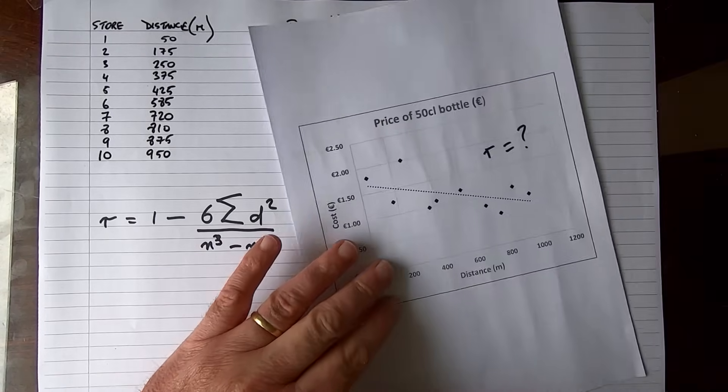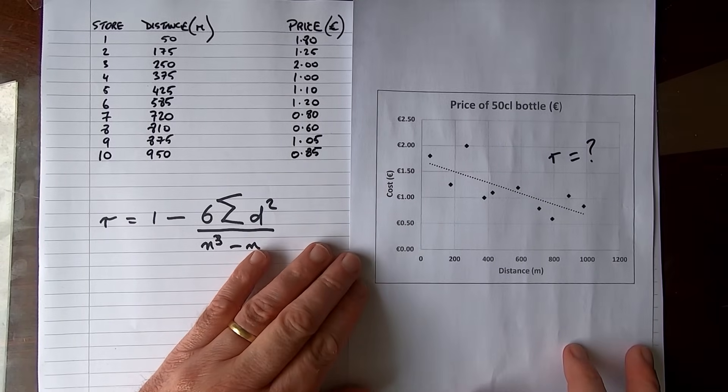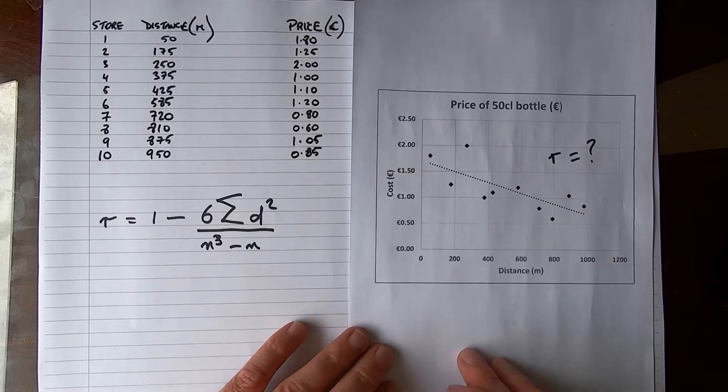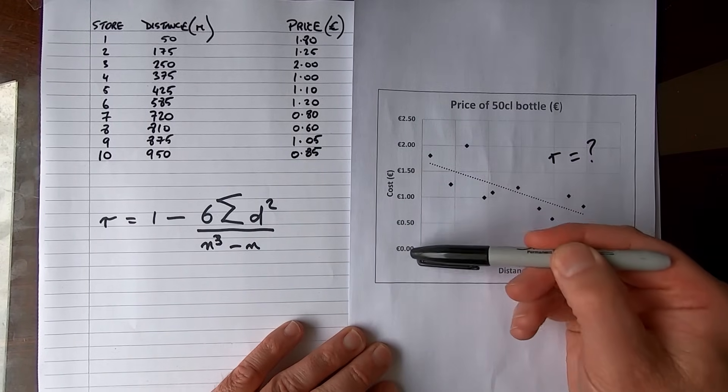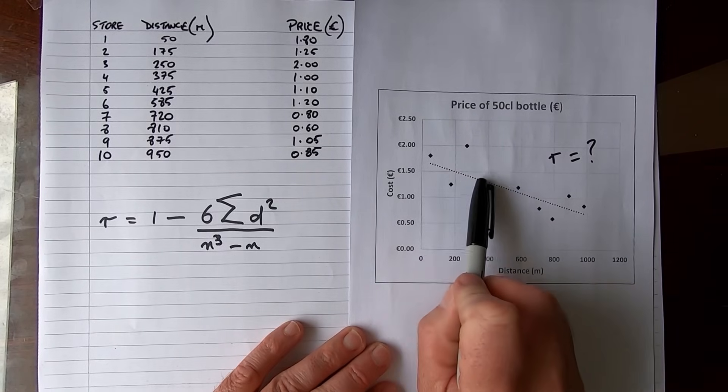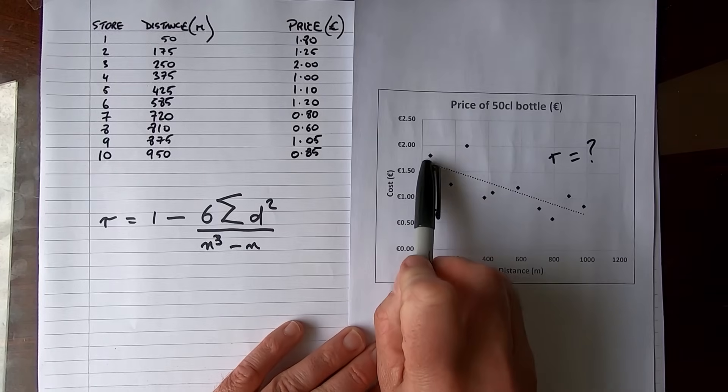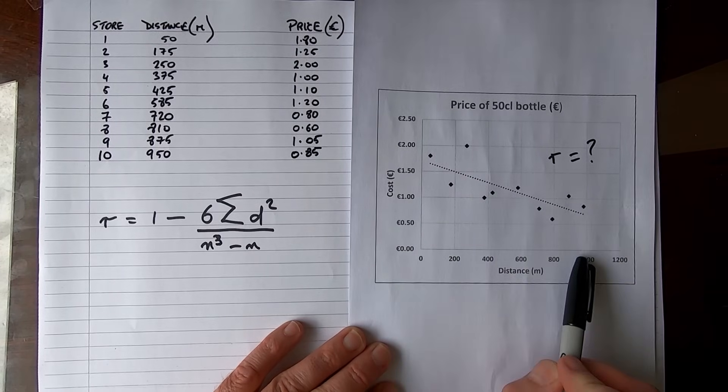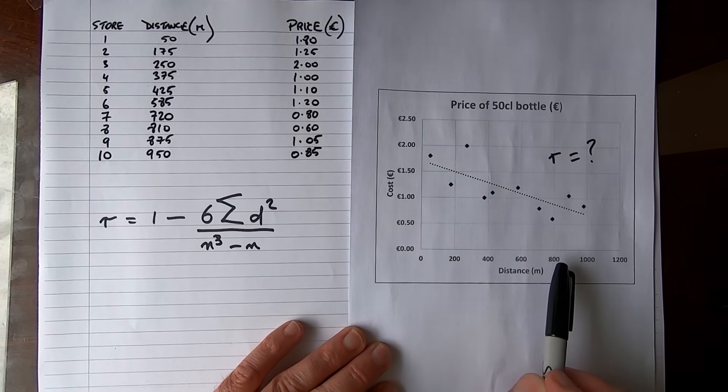A good idea when we're looking at data like this is to visualize the data. What I've done here is I have plotted the cost on my y-axis against the distance, and you can see that there's an overall trend. It looks as though the further out you go from the city center, the cheaper a bottle of water is going to be.